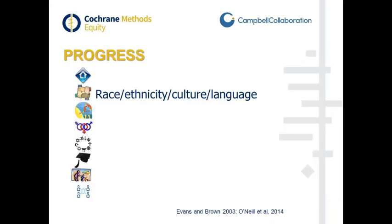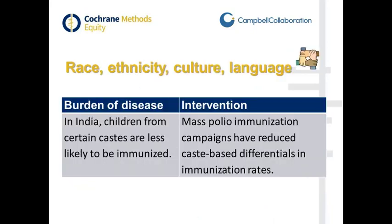For race, ethnicity, culture, and language, an example is that in India, immunization rates vary by caste, and some castes are less likely to be immunized. Interventions like mass polio campaigns can actually reduce those caste-based differentials.